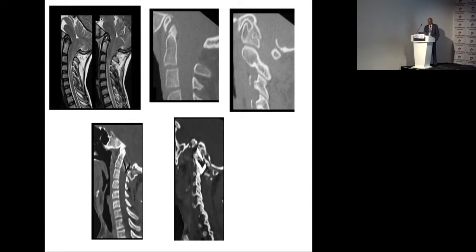Then we introduced another concept: even when there is no atlantodental interval issue, no facetal malformation or malalignment, and no compression of the neural structures — but there is Chiari malformation — we introduced the term 'central' or 'axial' atlantoaxial instability. Even Group Type 2 is also central, with no atlantodental interval disturbance.